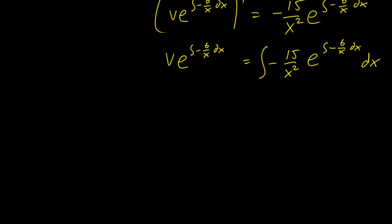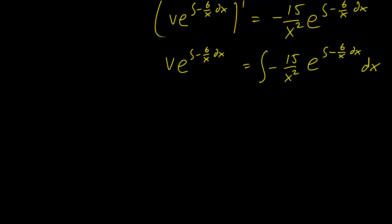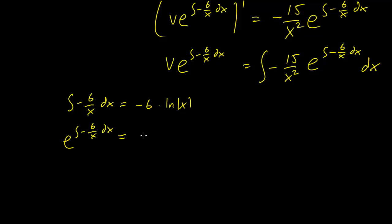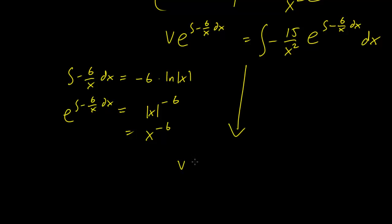Let's solve for the integrating factor. The integral of minus 6 over x dx is just minus 6 times log of x. Remember we don't add a plus c for integrating factors. Raising e to that power gives us x to the minus 6, and since the minus 6 exponent ensures the expression is even, we can drop the absolute value. So our integrating factor is x to the minus 6, giving us v times x to the minus 6 equals the integral of minus 15 over x squared times x to the minus 6 dx.